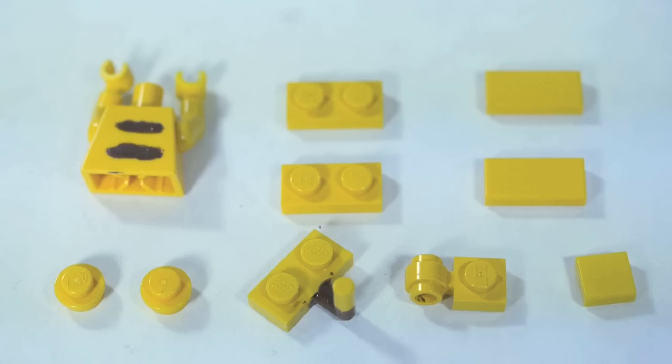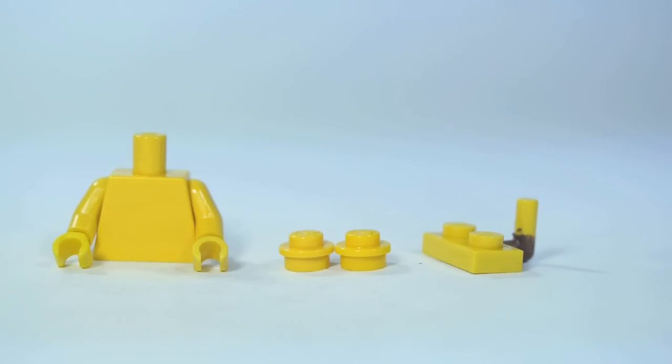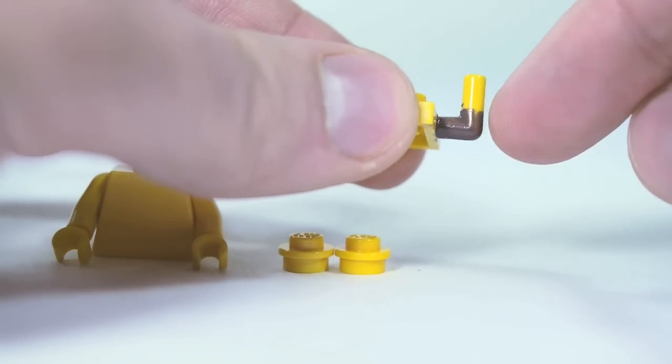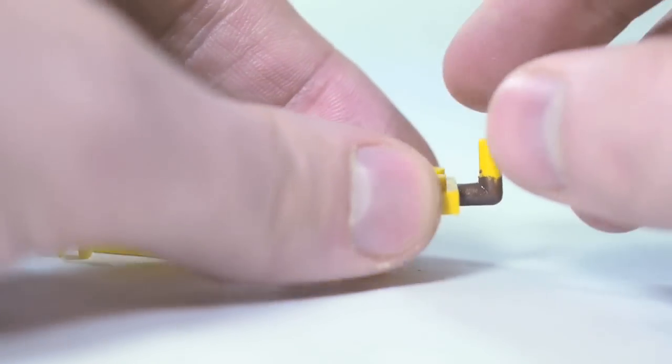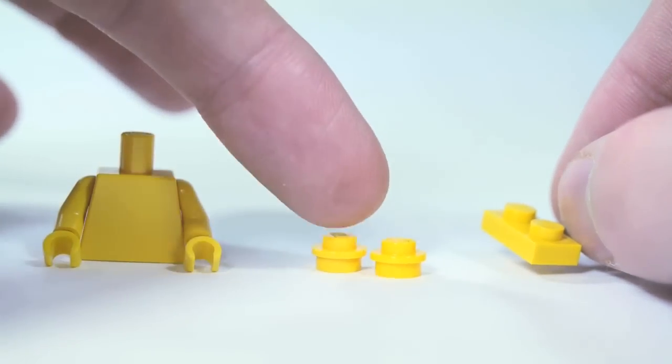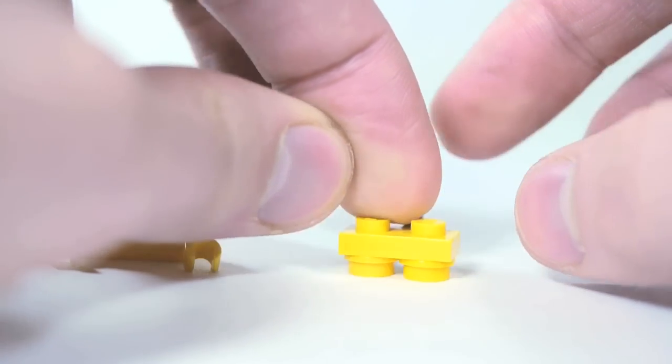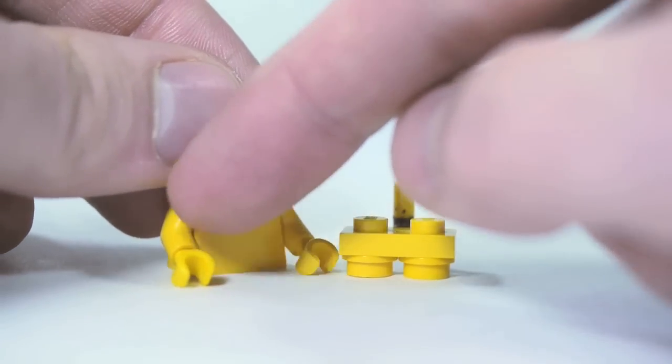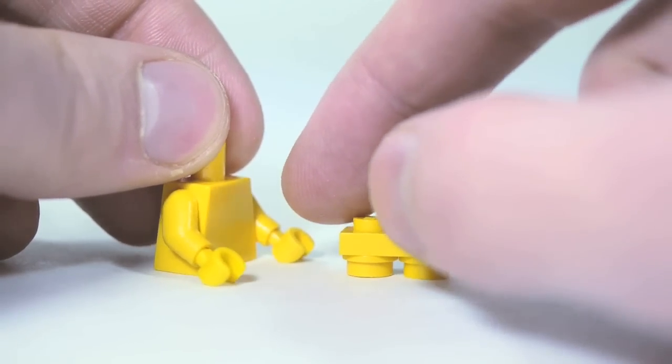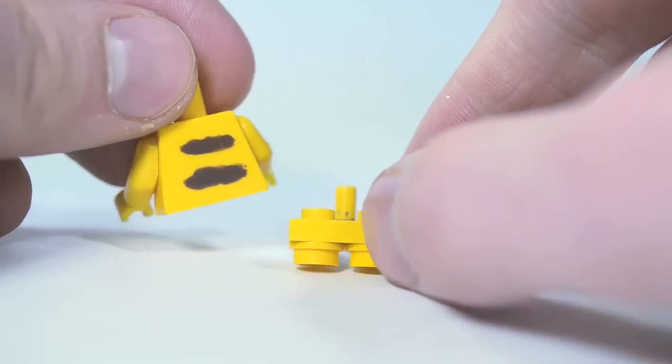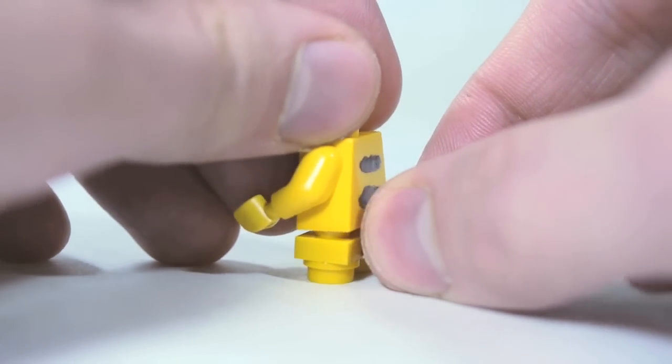These are the pieces you'll need for Pikachu's body. So for Pikachu, this is a 1x2 plate with a hook off the side. I painted this part brown for the brown part of his tail. I've got these two 1x1 plates there, round plates. Those are nice little feet. It's a yellow torso with yellow arms and hands. I painted some brown stripes on the back to represent the stripes on Pikachu's back. Put that on there.